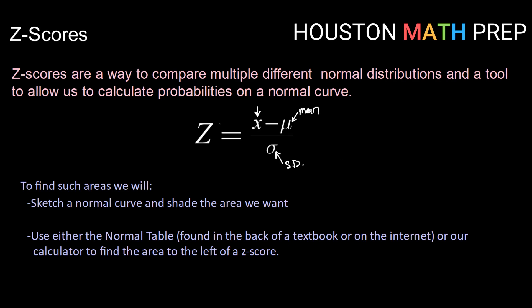Once we've calculated a z-score, we will sketch a normal curve and shade the area that we're interested in, and either use a normal probability table, which I'll show you in the next slide, but it can also be found in the back of any statistics textbook, or just Google and find it on the internet. Or, in later videos, I'll show you also how to use the calculator to find the area to the left of a particular z-score. So let's check out how to use z-scores with the normal table.